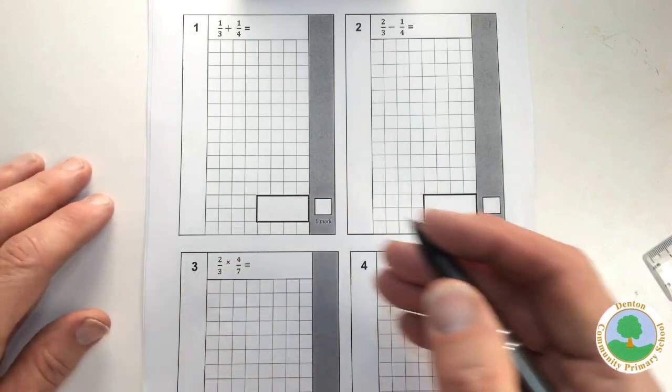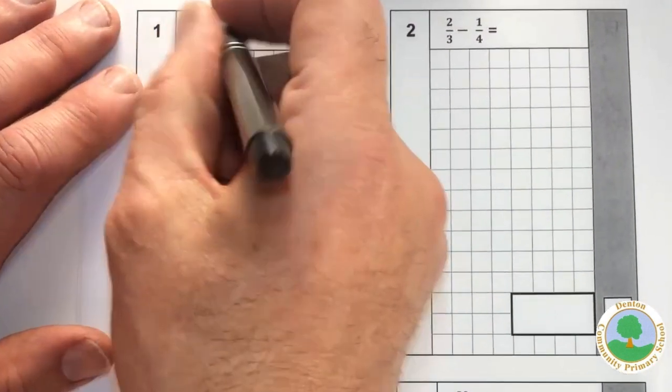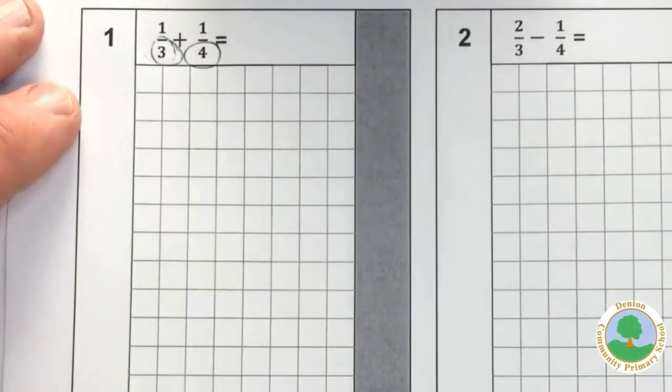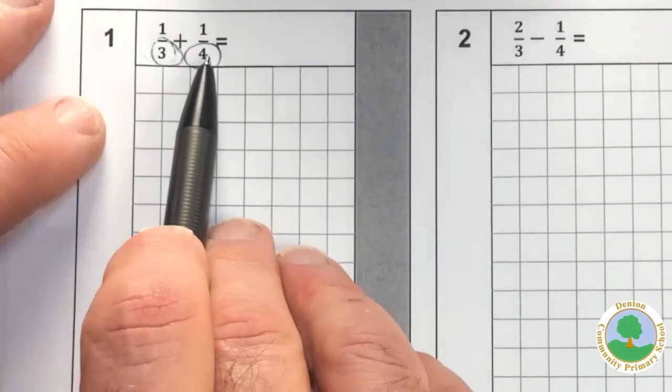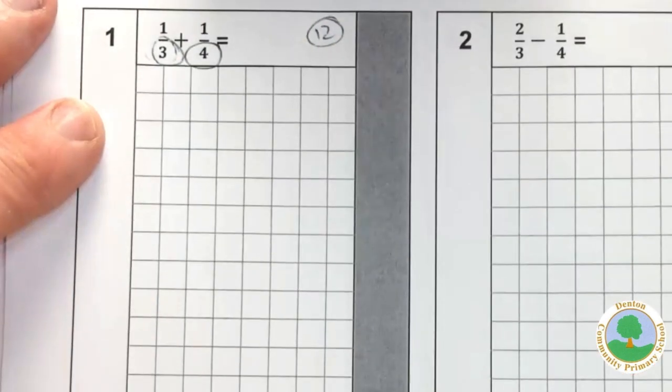OK, question one. One third plus one quarter. Remember, you can't add things with different denominators because the denominator denominates the size. So we're looking for the lowest common multiple of 3 and 4, which is 12.